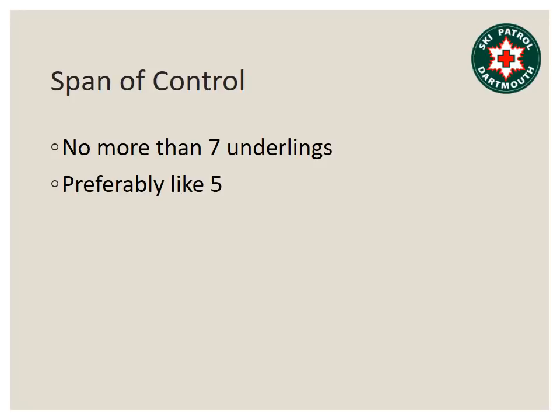If you are in the command structure and you are a boss of other people, you should have between three and seven underlings, and five is the ideal number. This is called the span of control. If you think about a huge incident where the incident commander has filled out all functional areas — an operations chief, logistics chief, planning chief, finance chief, a safety officer, and has to talk to dispatch on the radio — that's already six people wanting to talk to him constantly, and he's basically going to be maxed out.